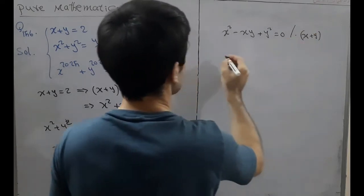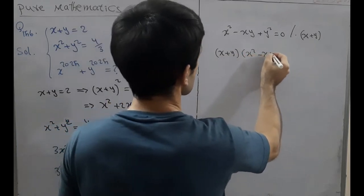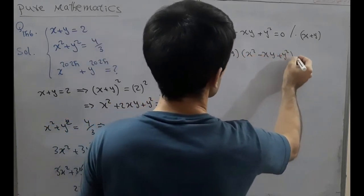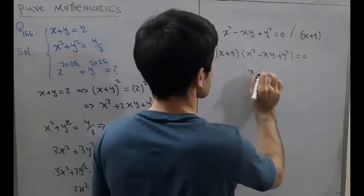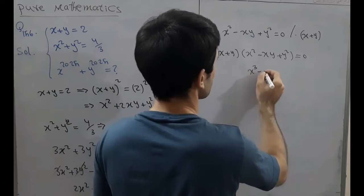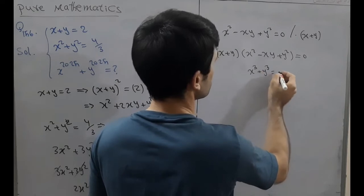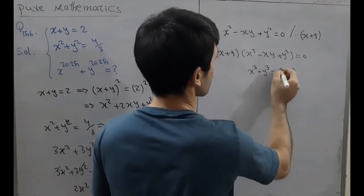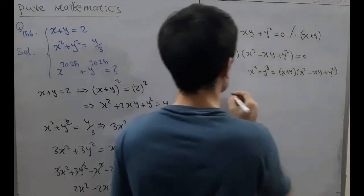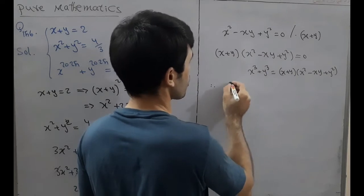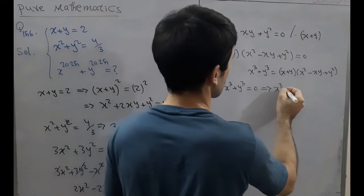We multiply both sides by x plus y to get x plus y times x squared minus xy plus y squared equals 0. Using the sum of cubes formula, this gives x cubed plus y cubed equals 0, which implies x cubed equals minus y cubed.